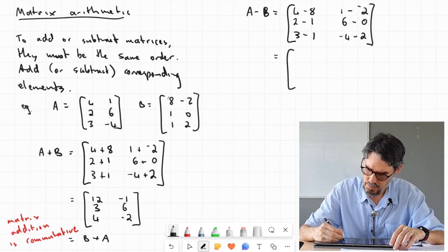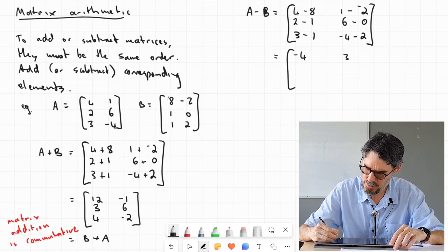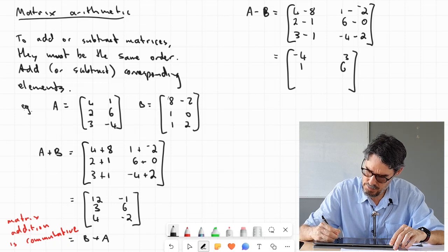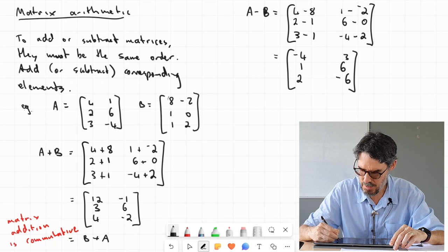So that's going to give me negative 4, 1 plus 2 is 3, 1, 6 take 0 is 6, 3 take 1 is 2, negative 4 take 2 is negative 6.